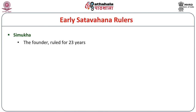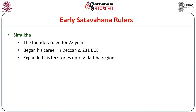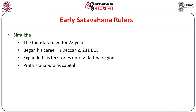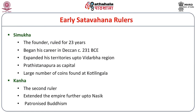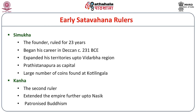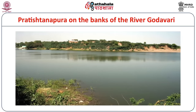Simuka was the founder and he ruled for 23 years. He began his career in the Deccan around 230 BCE after the death of Ashoka and the fall of Mauryan sovereignty. He expanded his territories up to the Vidarbha region and made Pratishtana his capital. A large number of his coins found at Kotilingala suggest that Simuka ruled over the Deccan combining parts of Andhra and Maharashtra. Kanha was the second ruler, who extended the empire further up to Nasik and patronized Buddhism.